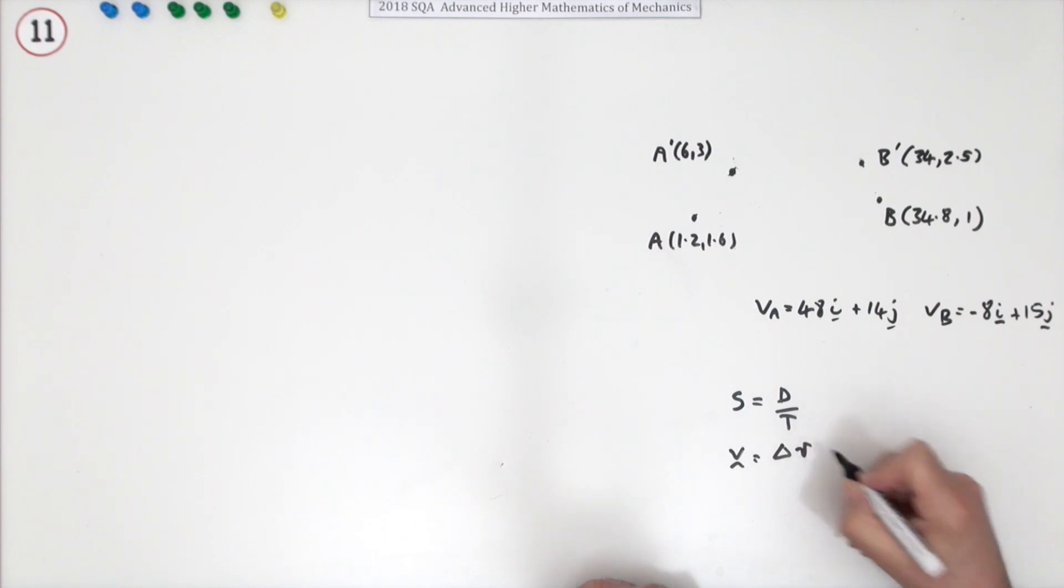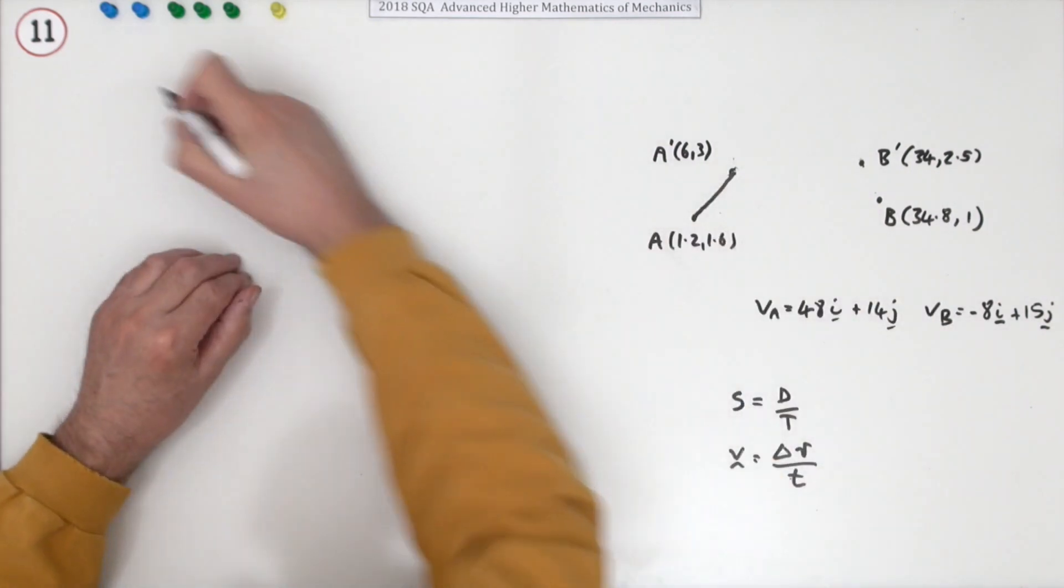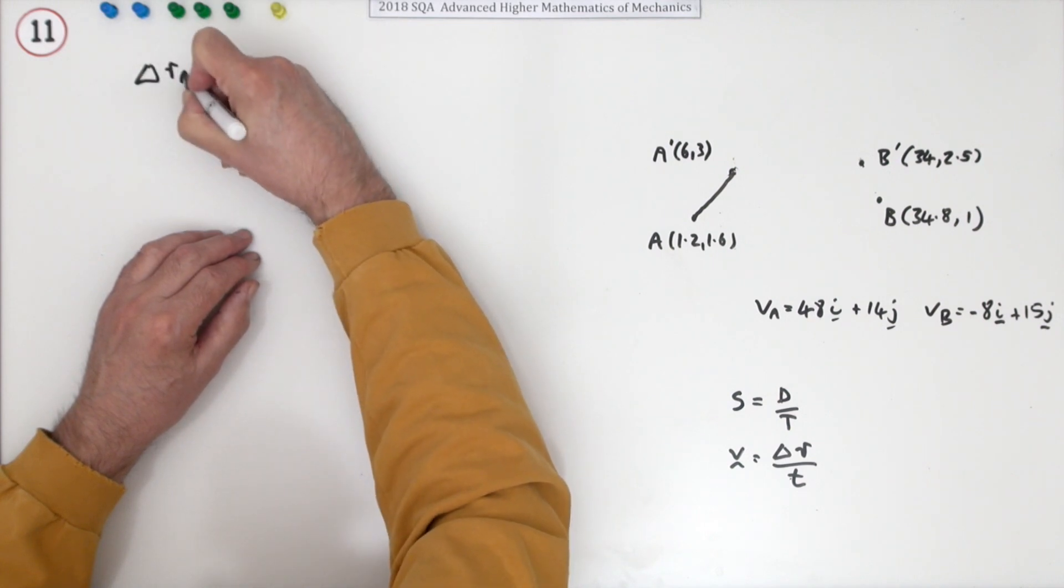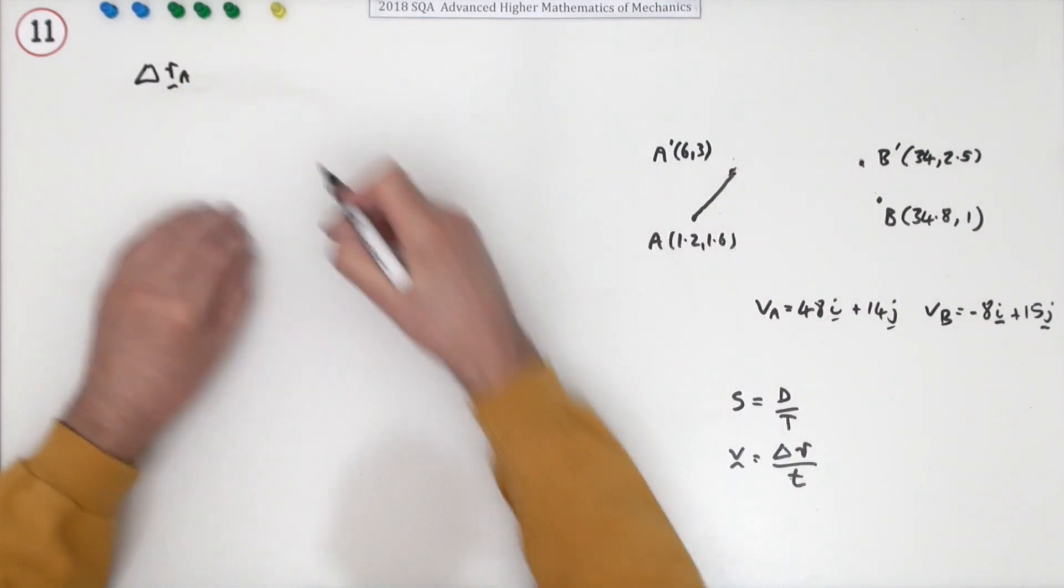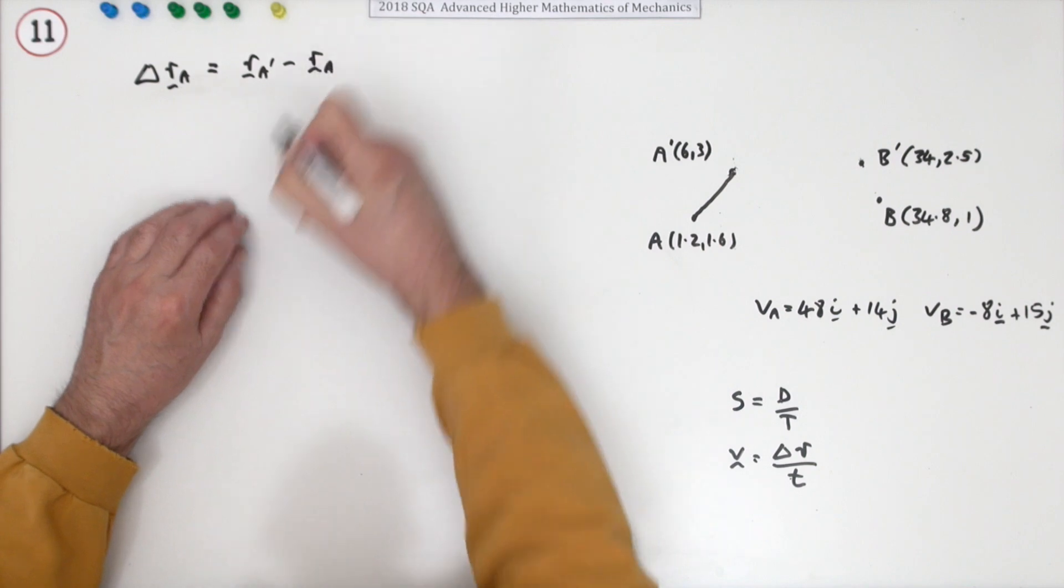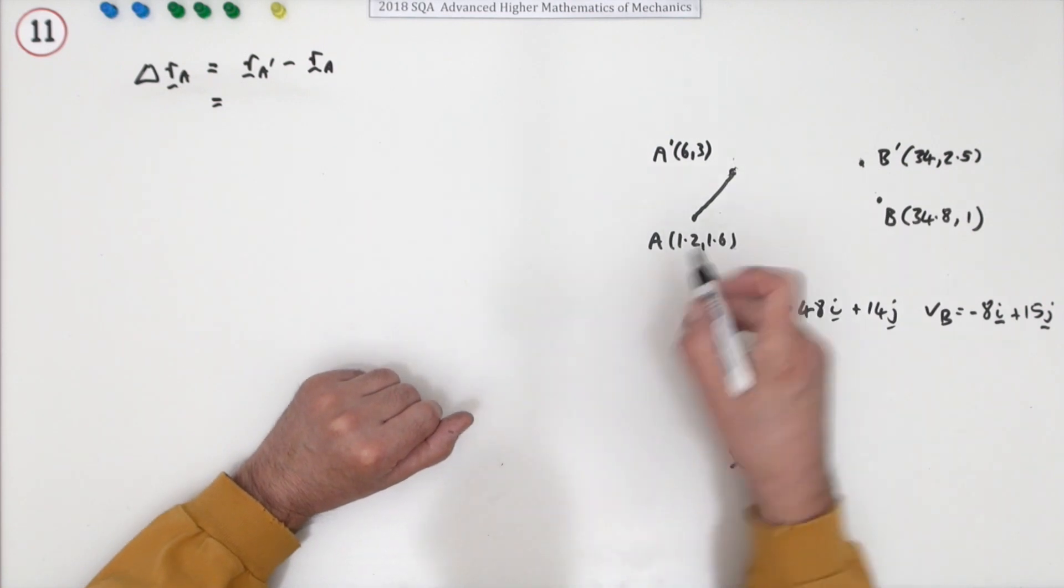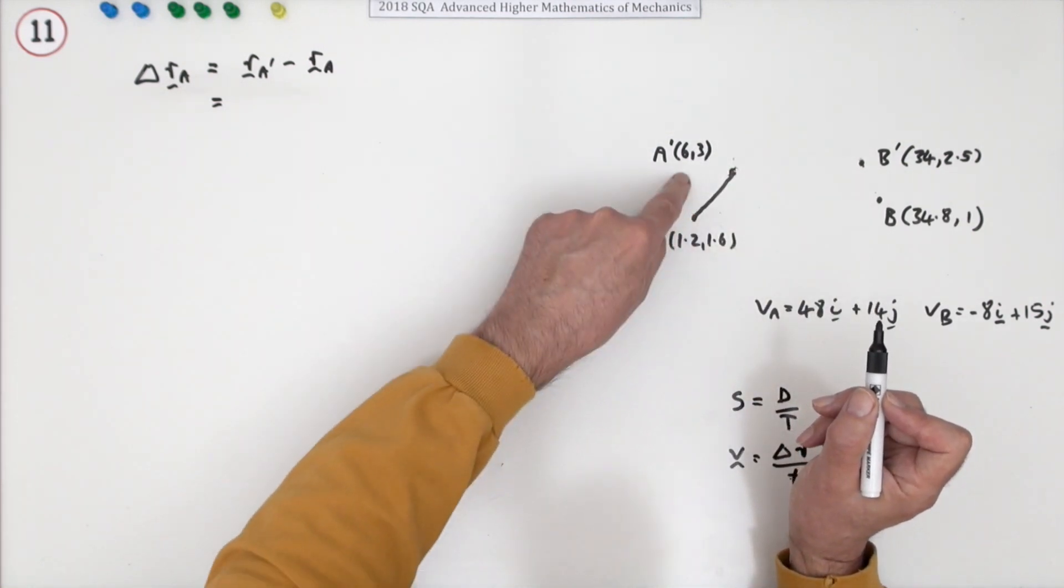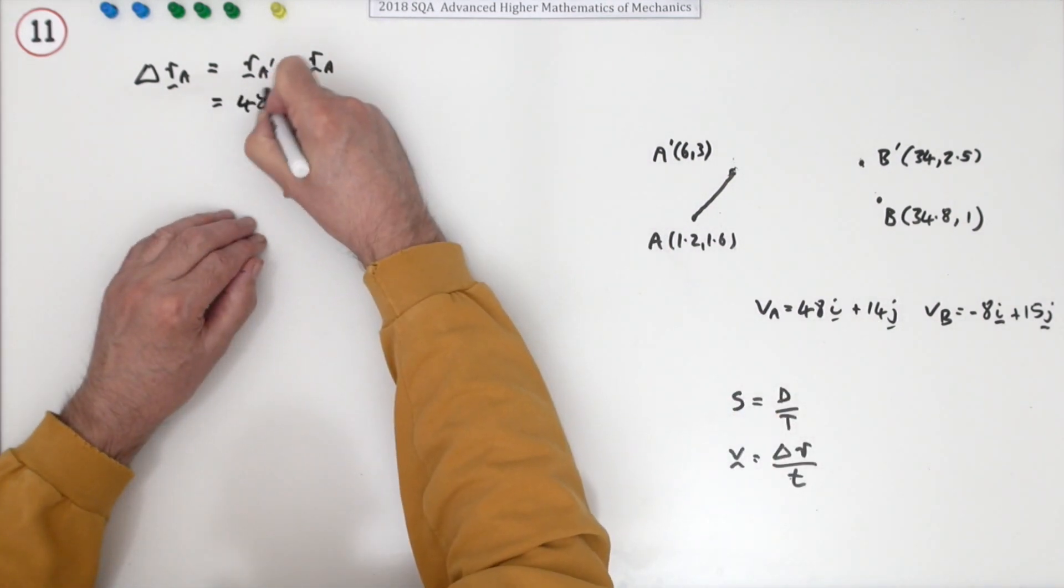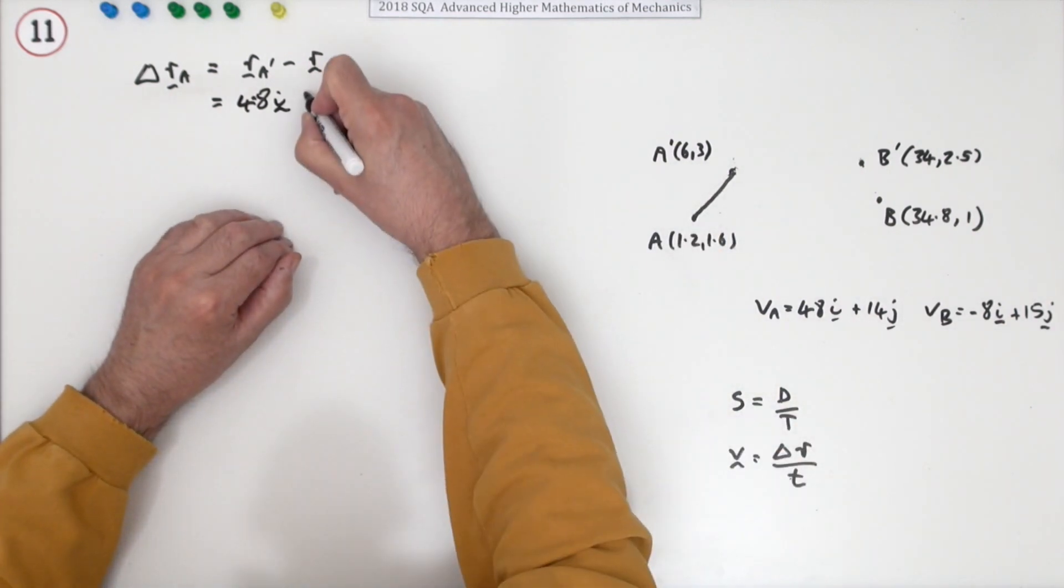Just as with a scalar movement you would write this, if it was a vector movement you would say the velocity vector would be the difference in the position of the point divided by the time it took to undergo that displacement. For VA, for the first one, for A, what is the difference in the position vector in A over that period of time? Well that will be r_A' minus r_A. I'm not going to specify them all because there's only one mark overall. The x component went from 1.2 to 6 so that was 4.8i. The y component went from 1.6 to 3 so that's a plus 1.4j.